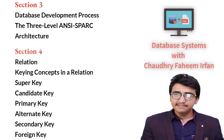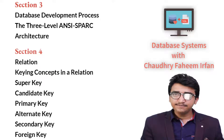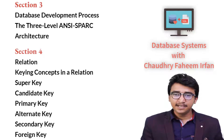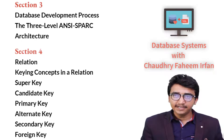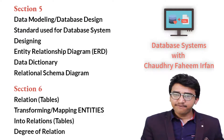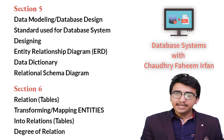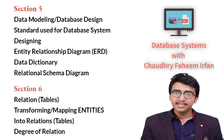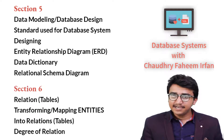In section three: database development process and the three-level ANSI/SPARC architecture. In section four, which is very important and very easy: relations and key concepts in relations — super key, candidate key, primary key, alternate key, secondary key, and foreign key. These keys are very important.